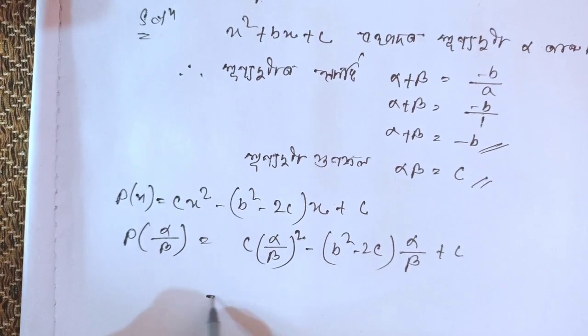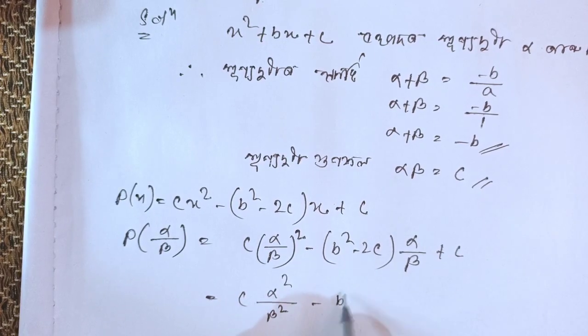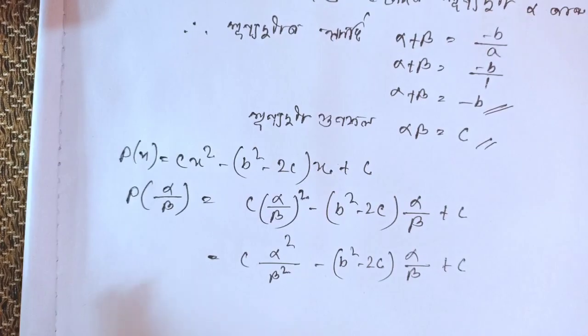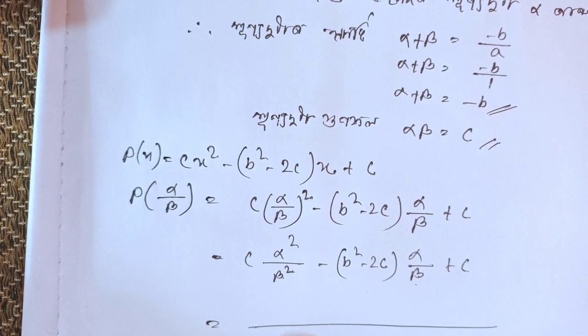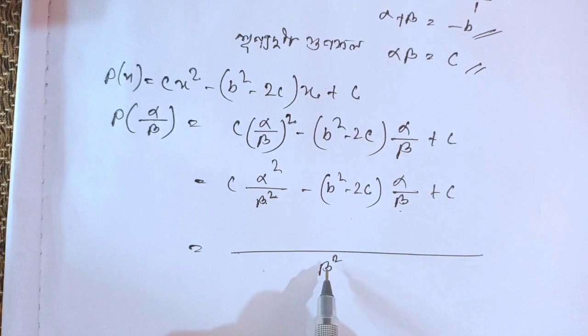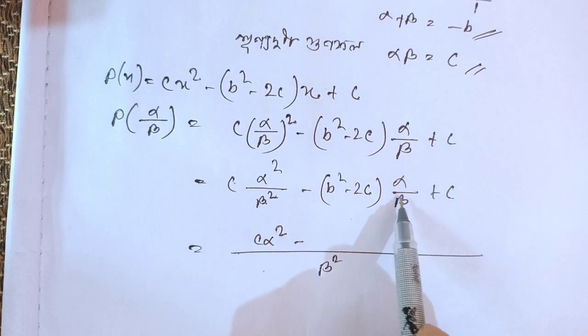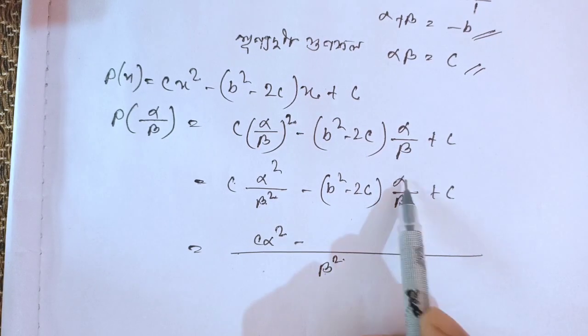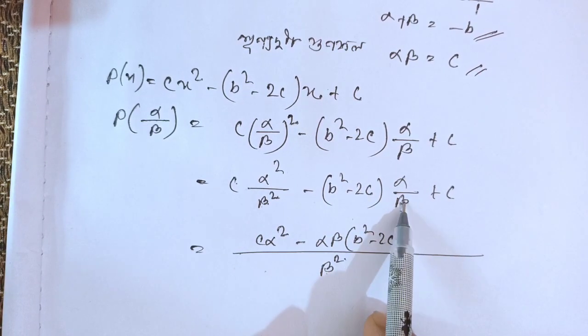Taking β² as the common denominator: this equals [cα² - (b² - 2c)αβ + cβ²]/β². Simplifying further: [cα² - b²αβ + 2cαβ + cβ²]/β².